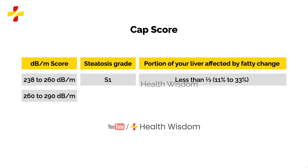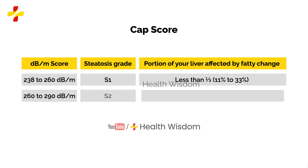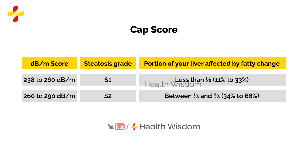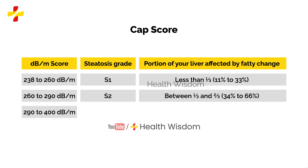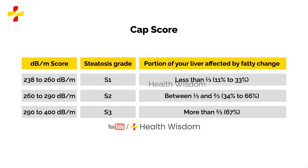Score 260 to 290 dB/m: S2, between one third and two thirds, meaning 34% to 66%. Score 290 to 400 dB/m: S3, more than two thirds, meaning 67% or more.